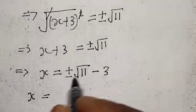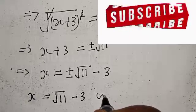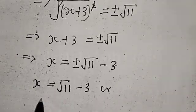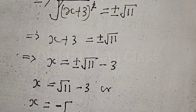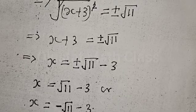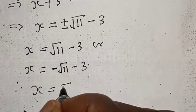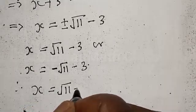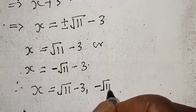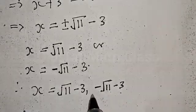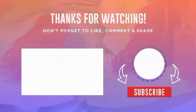Taking the positive sign first, x is equal to plus the square root of 11 minus 3. Or taking the negative sign, x is equal to minus the square root of 11 minus 3. If you have enjoyed the class, please don't forget to like, share, comment, and subscribe. Thank you.